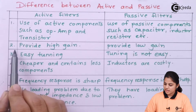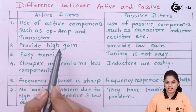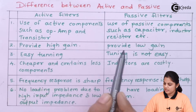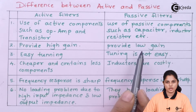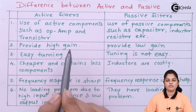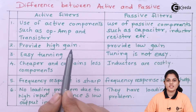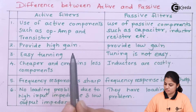Second difference: active filters provide high gain, whereas passive filters provide low gain. Since gain is high in active filters, active filters are always preferred for operations.